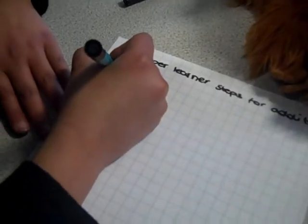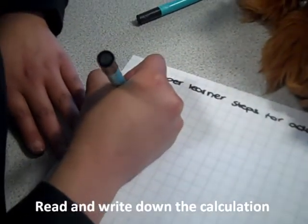Super Learning Test for Addition. Write the calculation: 1.50 and 72 pence.